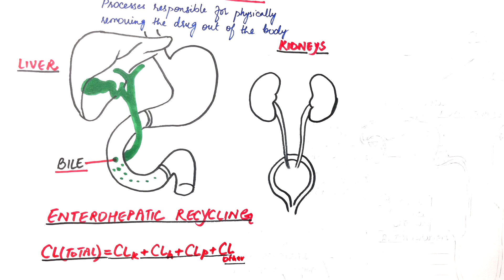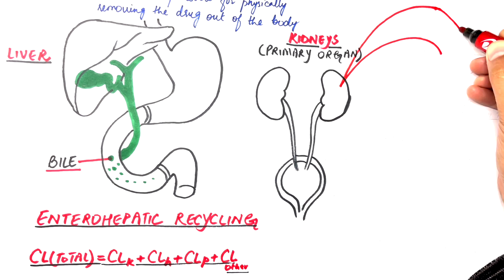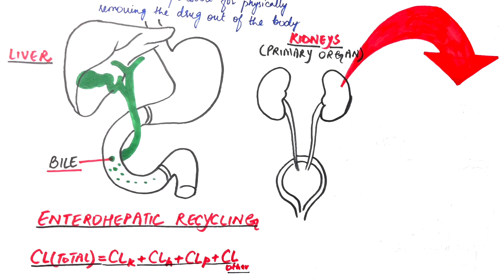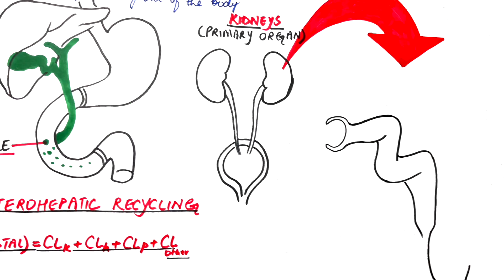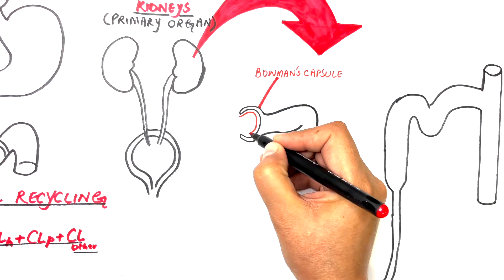Before jumping into the mechanisms of drug clearance via the kidneys, let's have a one minute recap of the structure of a single nephron, which is the functional unit of kidneys. This will be the structure of a single nephron from a pool of nephrons of the kidneys, comprising of Bowman's capsule.